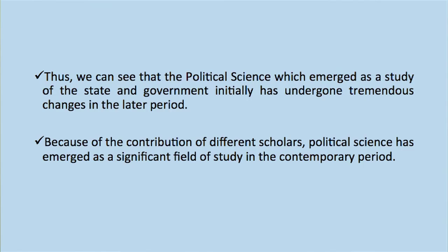Accordingly, we find that political science, which emerged as a study of the state and government in the early period, has undergone tremendous changes through the ages. Owing to the contributions of different scholars, the scope of political science is ever widening and its nature is fast changing. In the present time, the focus of political science has shifted from the study of the state and government to the study of the political system as a whole. In the contemporary period, political science has been able to make a distinctive mark of its own and establish itself as a significant field of study.